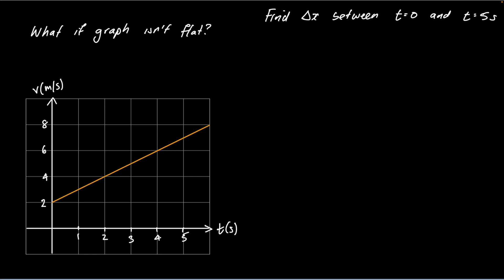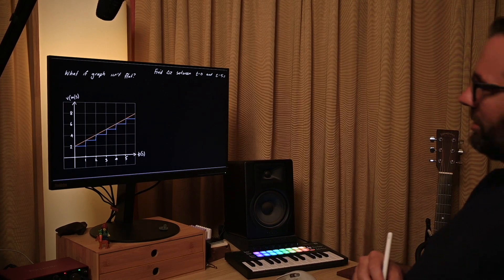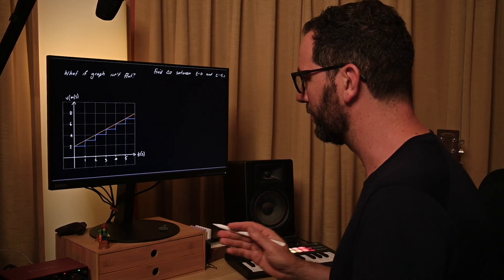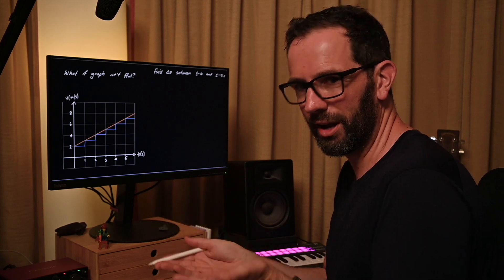What I'm going to do is pretend that for the first second, instead of the velocity going up from two to three, it just stays constant at one. Then for the second second, I'm going to assume the velocity stays constant at three. For the third second, I'm going to assume it stays constant at four. I'm saying I don't know how to do the orange line, but I can pretend it's flat between those just for one second intervals.